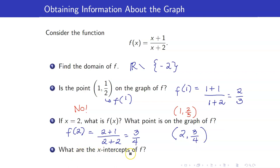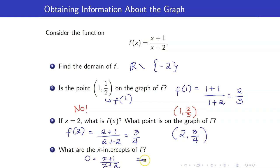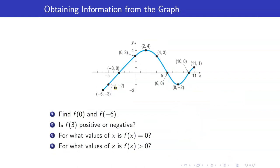Next, what are the x-intercepts of f? To get the x-intercept, set y to 0. A fraction equals 0 when the numerator equals 0, so x equals negative 1. That is the only x-intercept of the graph.